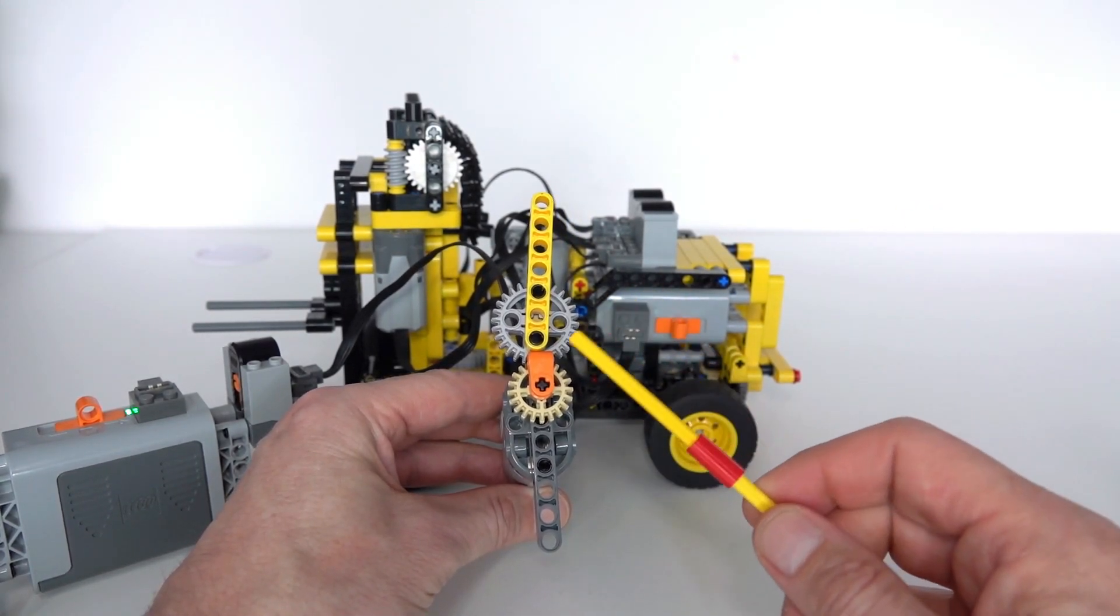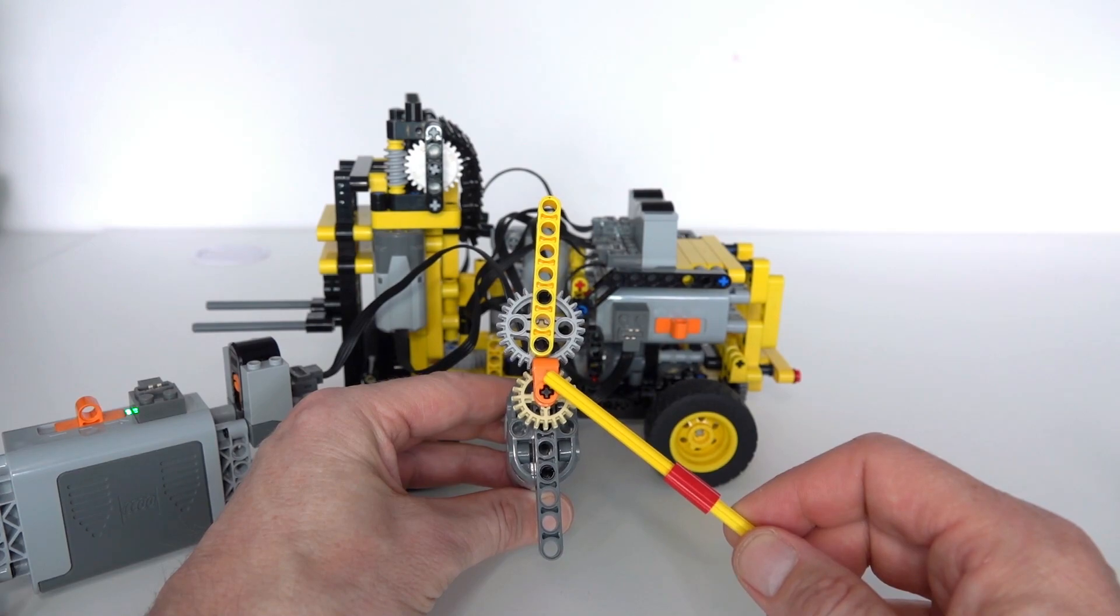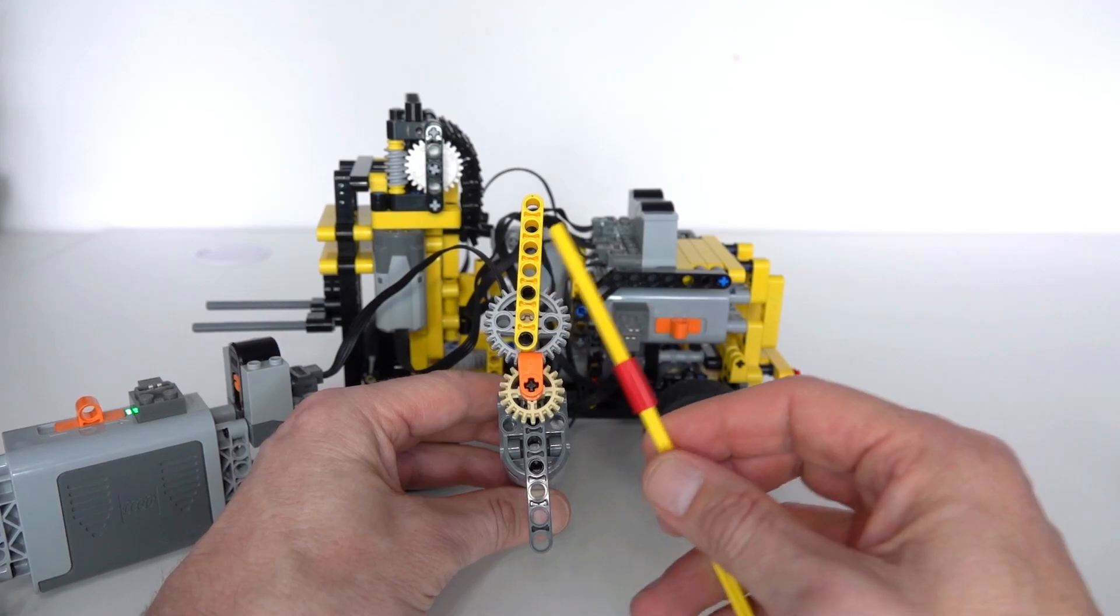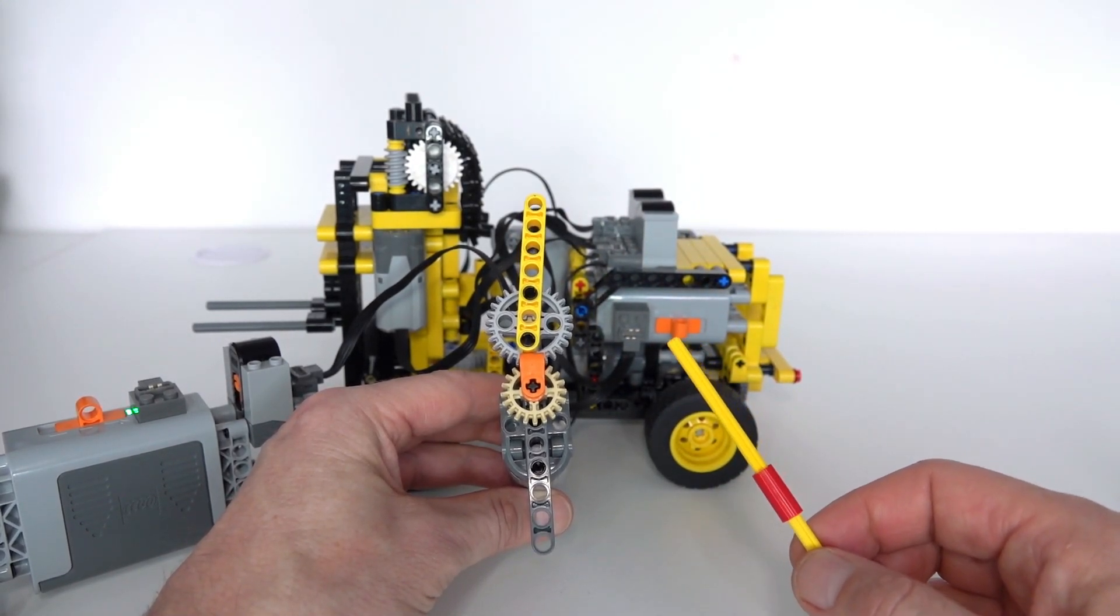And when you let go of the remote, it will automatically recenter itself back to the middle. So what that means is that it automatically re-centers the steering mechanism back to neutral, allowing it to just carry on driving forwards or backwards.